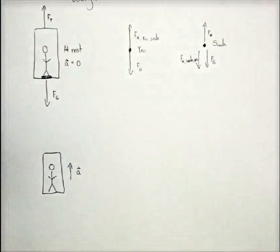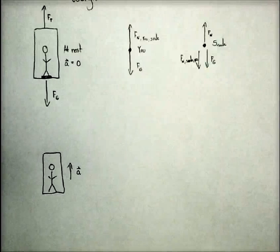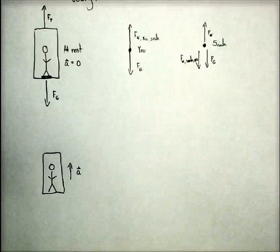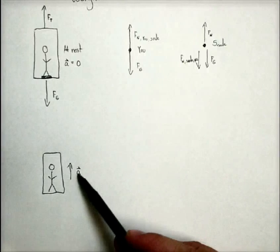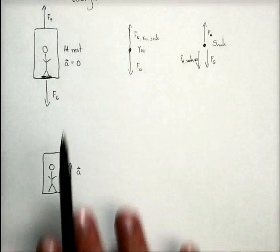Now, I hope you've noticed that anytime there's an acceleration, there's always a net force involved. If there is a net force, there will be an acceleration. If there is an acceleration, there is a net force. And the acceleration and the net force are always in the same direction. So in this case, since it's accelerating upward, our net force has to be upward.